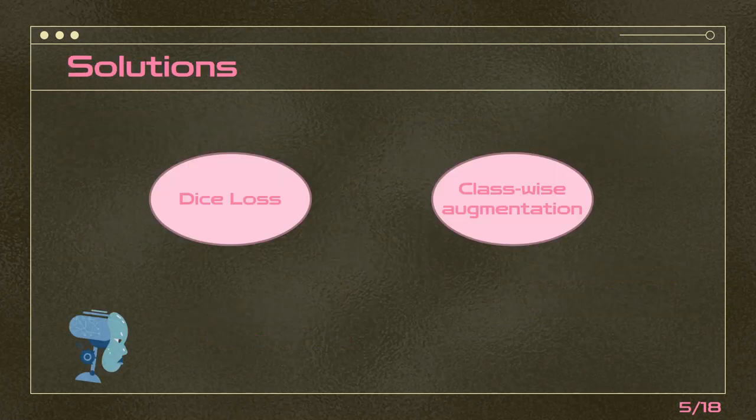To overcome this issue we use two methods. One of them is dice loss, which I will explain later. The other one is classwise augmentation. In this method we try to produce some images for the defects with fewer data and make a dataset with an equal number of images in each class. We used some simple augmentations for it — for example, vertical flip, horizontal flip, rotations at different angles, and things like that.